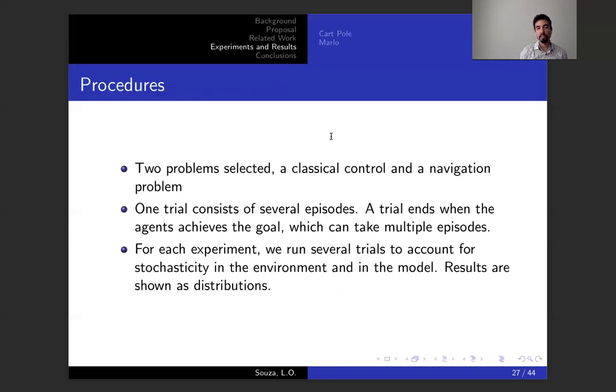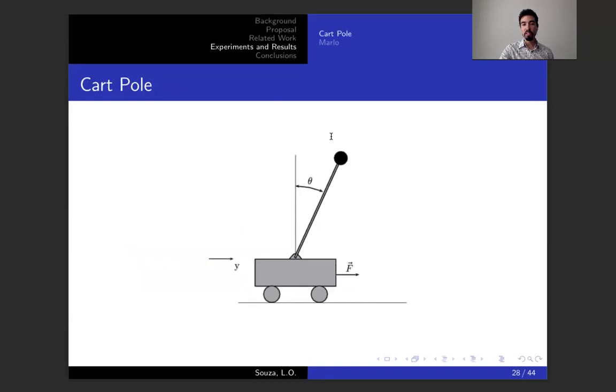I'll quickly go through the experiments. We run two problems. One is a classical control problem, and the other is a navigation problem. Each trial we show consists of several episodes, and a trial ends when the agents achieve the goal, which can take multiple episodes. This is the common setting in reinforcement learning. For each experiment, we run several trials to account for the stochasticity in the environment and in the model, and all the results shown are therefore distributions. This is cart pole. It's a very classical problem. You have this small cart, and the action is to move it left or right, and the goal is to keep the pole upright.